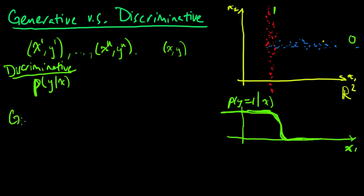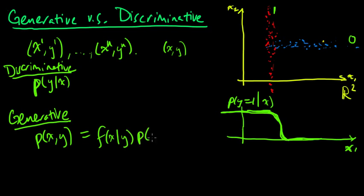Now, a generative model, on the other hand, would model both, it would model the joint distribution of x and y. So in this case, we could factor this as the density, let's write it as f, so the density of x given y times the probability of y.